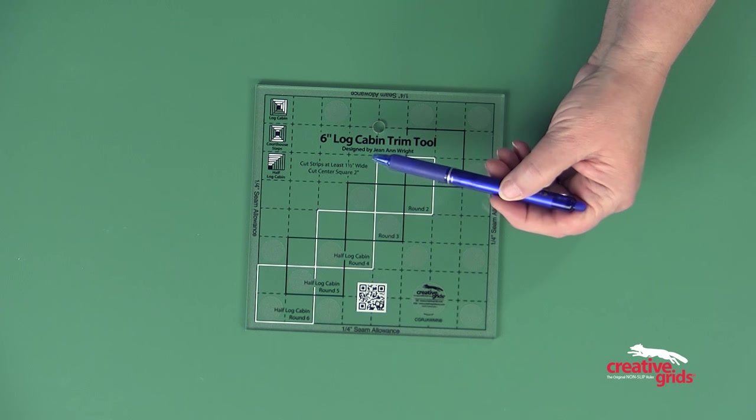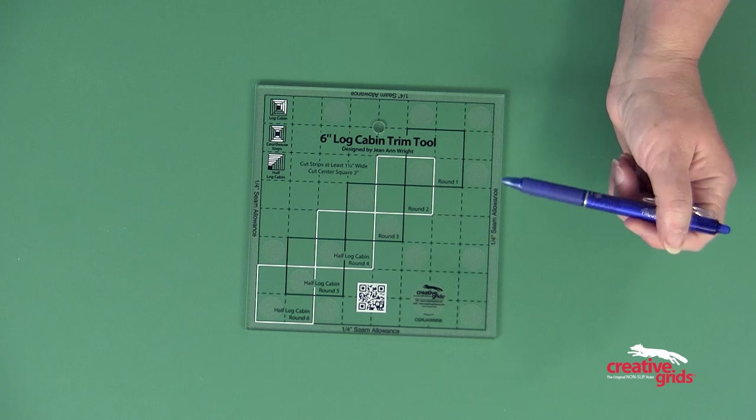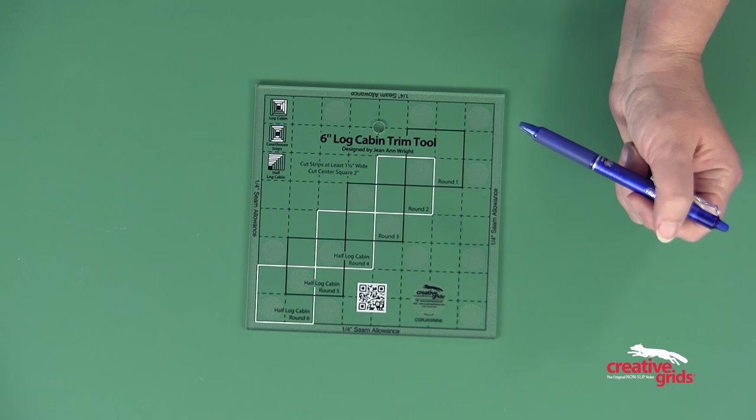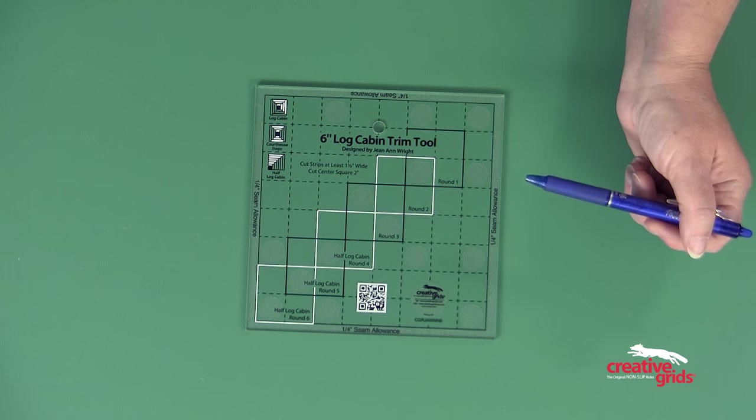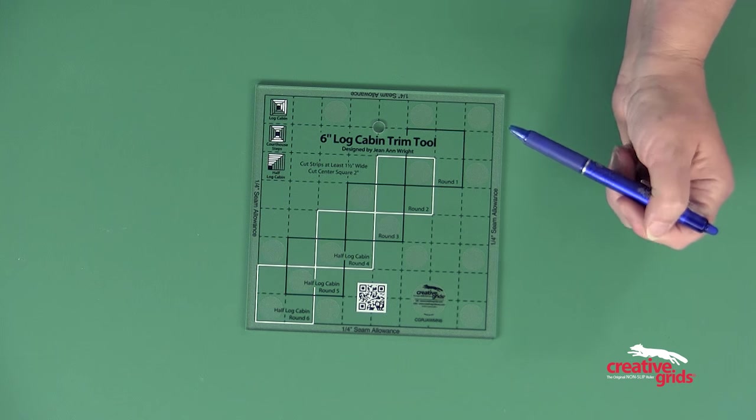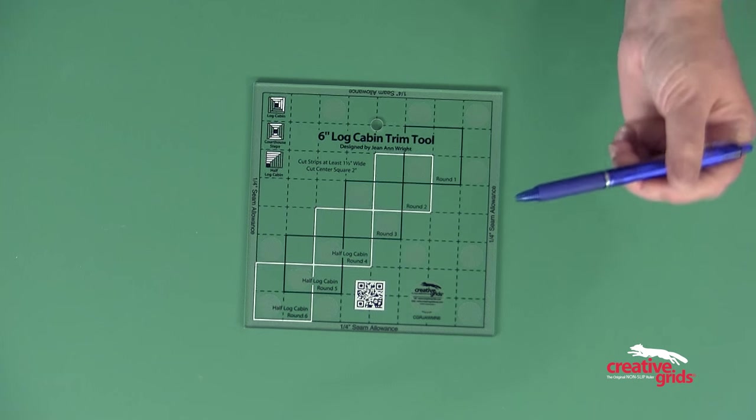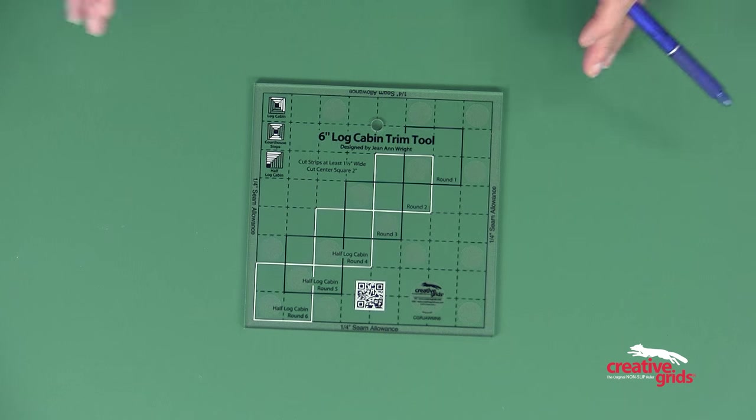That is about a quarter of an inch wider than you need, which allows you to trim your blocks after cutting, sewing, and pressing, so that any inaccuracies in any one of those steps can be corrected as you trim. So now I'm going to show you how the tool works.